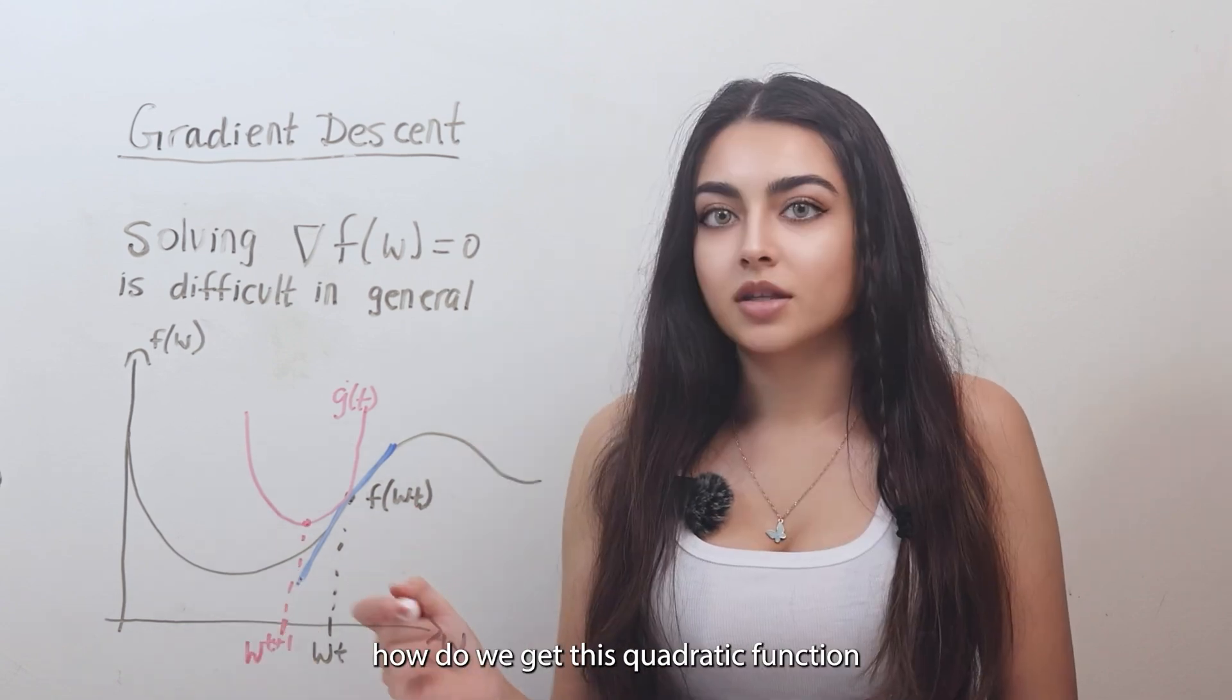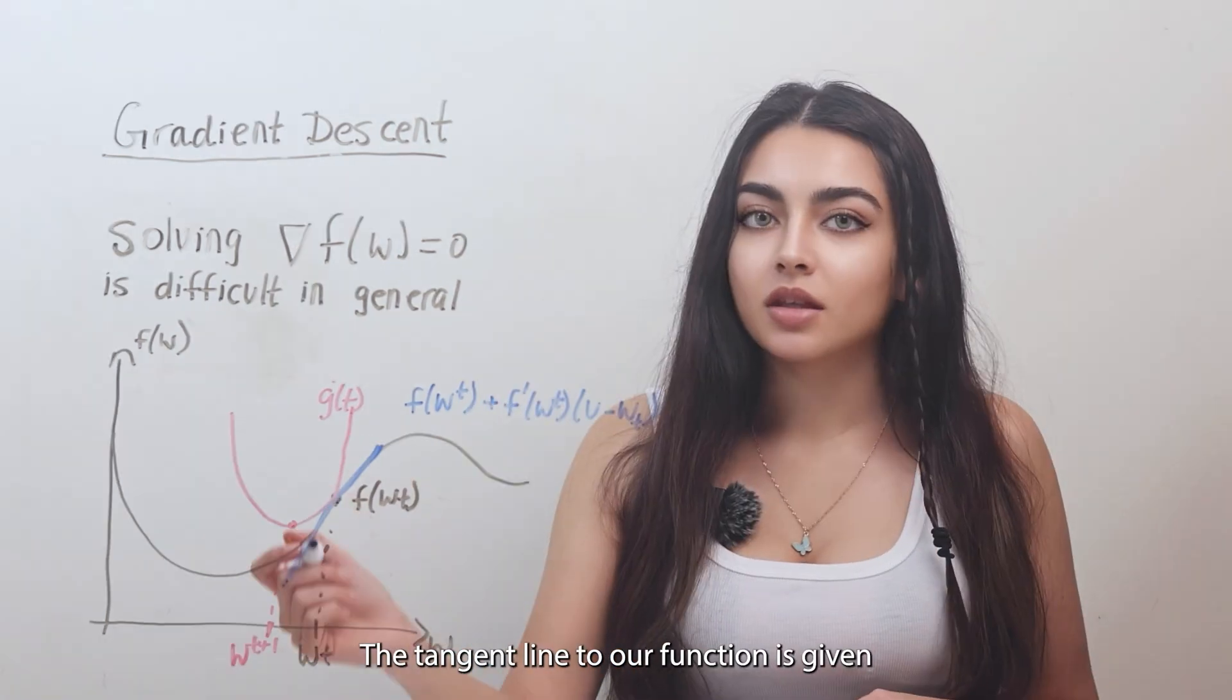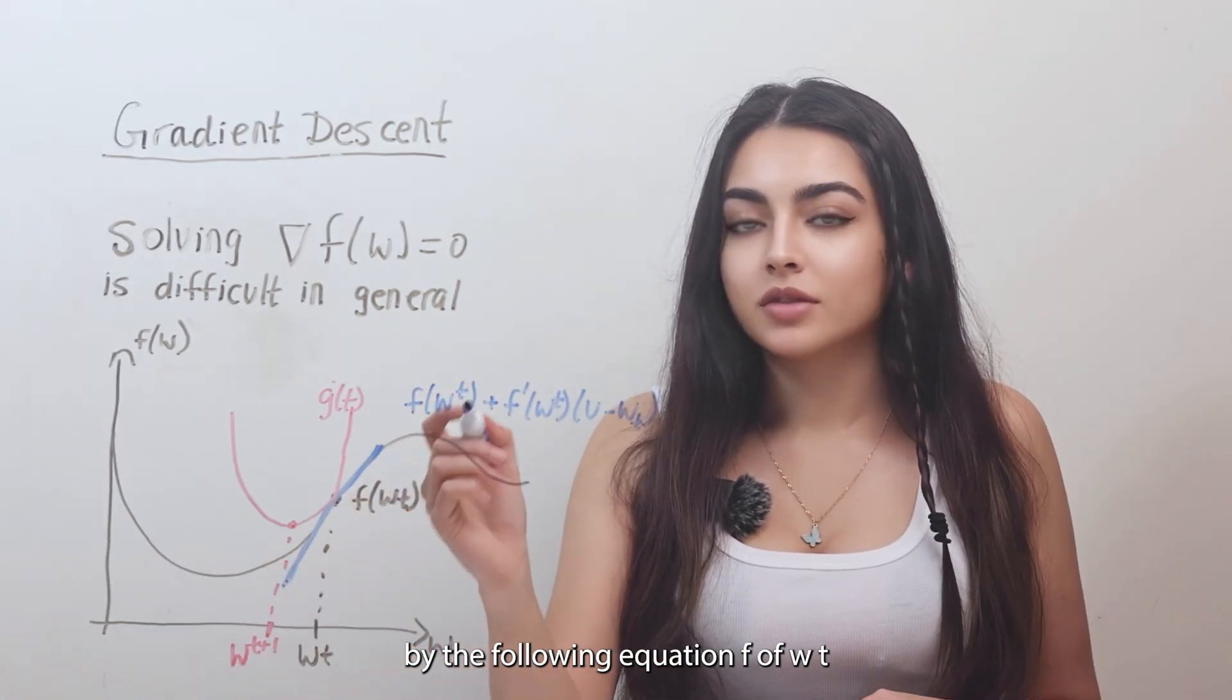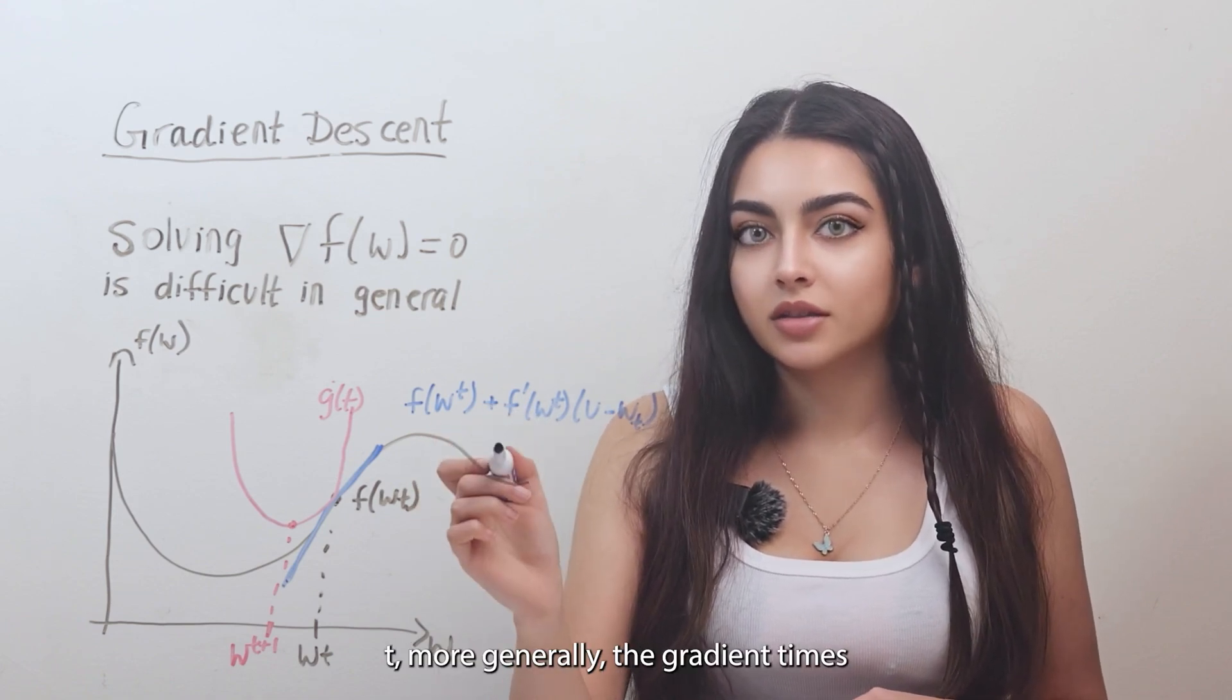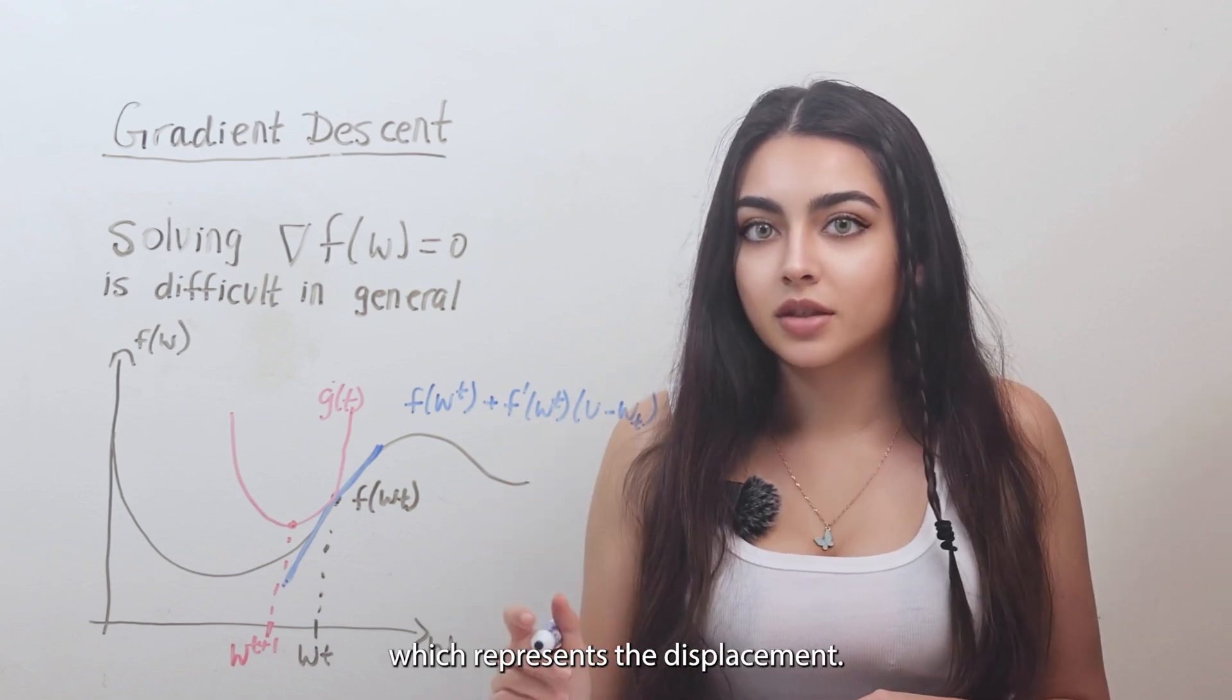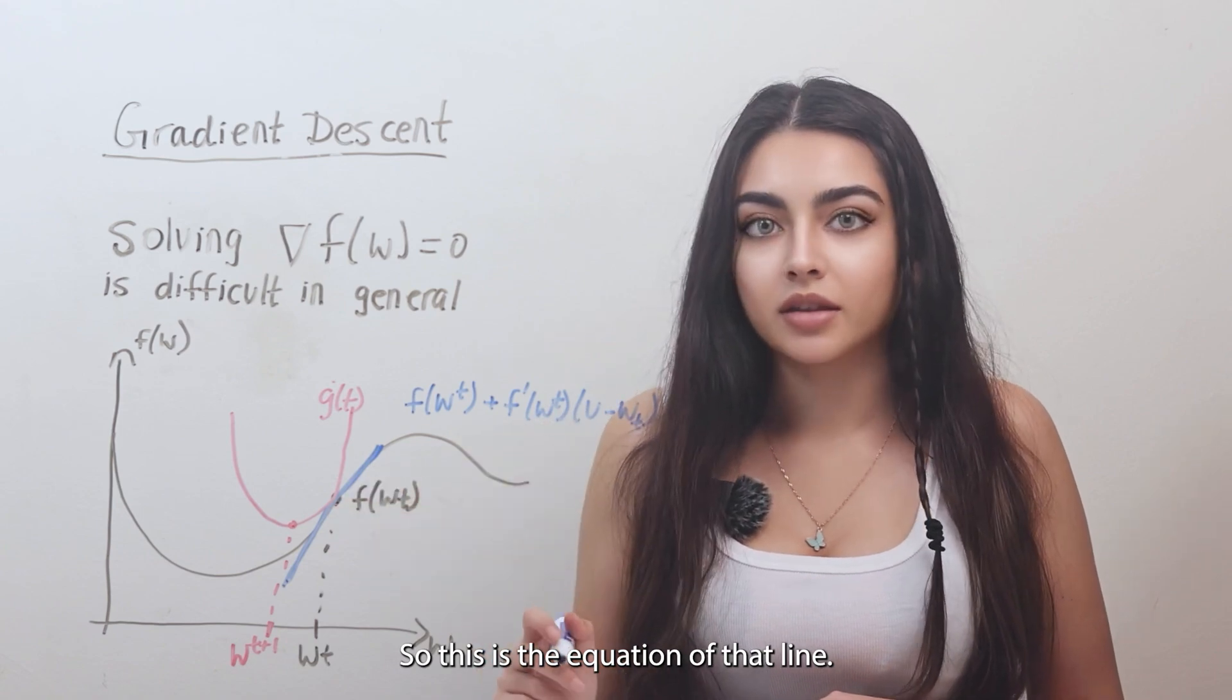Now the question is how do we get this quadratic function g of t? The tangent line to our function is given by the following equation: f of wt plus the derivative of f at wt, more generally the gradient, times u minus wt, which represents the displacement. And of course this is for any u. So this is the equation of that line.